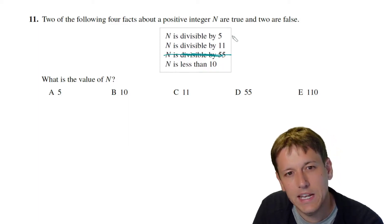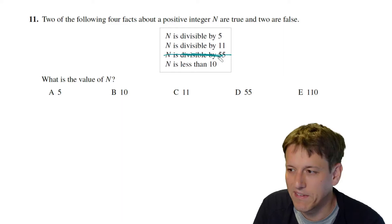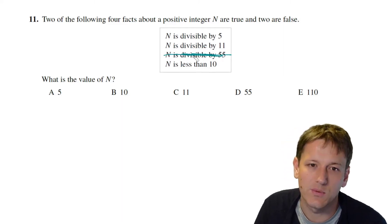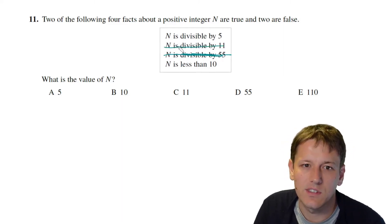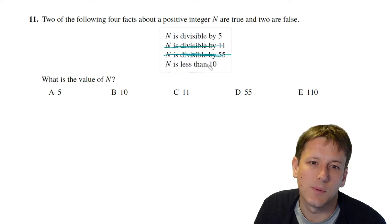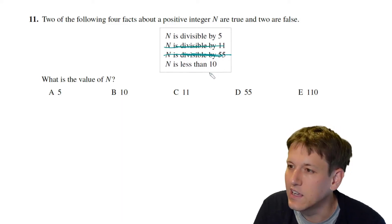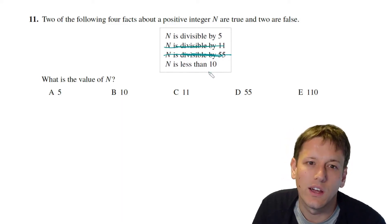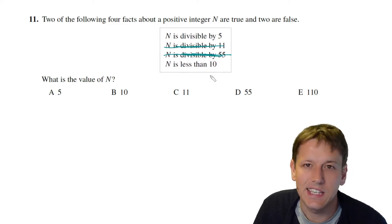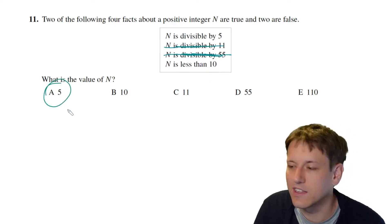So it can't be simultaneously divisible by 11 and less than 10 so that combination is not valid. If it were divisible by 11 and divisible by 5 it would also be divisible by 55 so we've ruled that combination out as well. So the only pair of statements that can be true are divisible by 5 and less than 10 and at that point we know the only number divisible by 5 that's less than 10 is 5 and so again we get the answer.